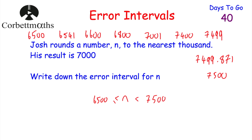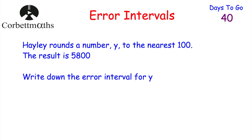Let's have a look at another question — this is another one for you to try. Hayley rounds the number y to the nearest hundred. She's rounding a number to the nearest hundred, and the result is 5,800. Write down an error interval for y. Feel free to press pause now and write down an error interval for y.